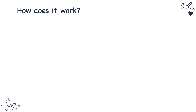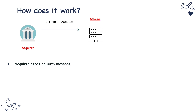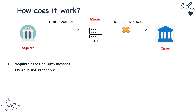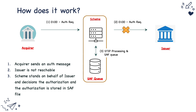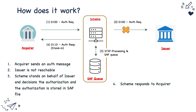Now let's look in detail at how it works. First, the acquirer sends an authorization message to the scheme. The issuer is not reachable, so the scheme stands in on behalf of the issuer and decides the authorization. The scheme looks at the parameters we discussed and maintains a SAF queue — a store-and-forward queue. It stores all the authorization details received from the acquirer and the decision made, then responds to the acquirer.